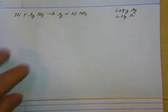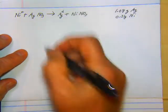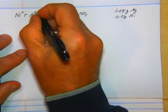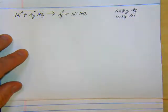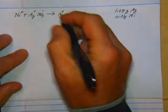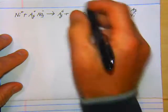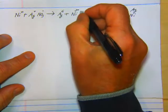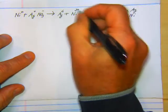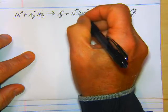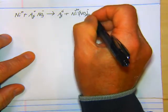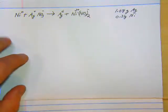Now we need to balance for charges. We know free elements are zero. Silver's 1+, nitrate's minus 1, so we're pretty good there. In the problem, it says nickel 2+. We know nitrate's a minus, so we do the crossing. So it's Ni(NO₃)₂.